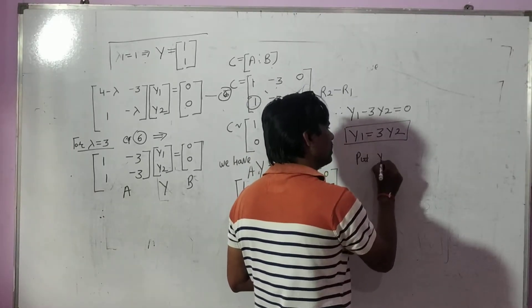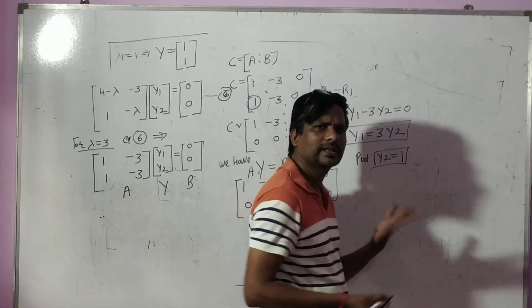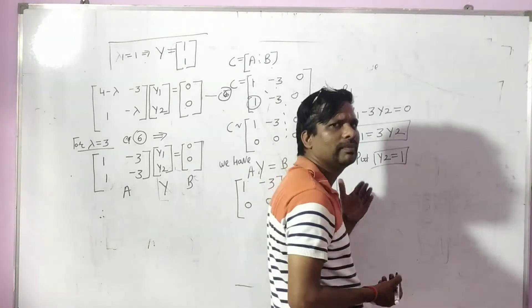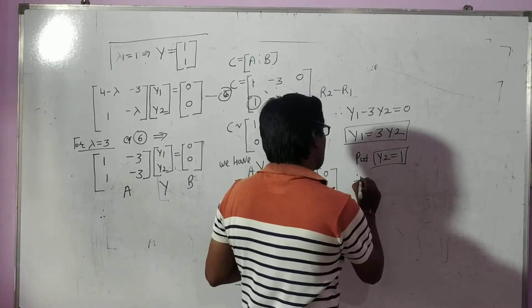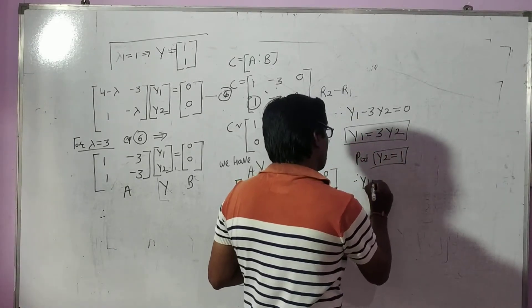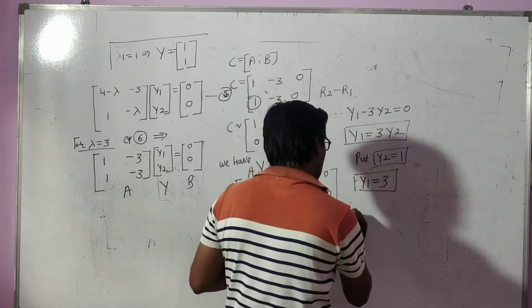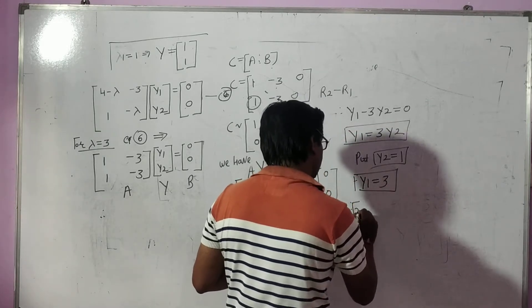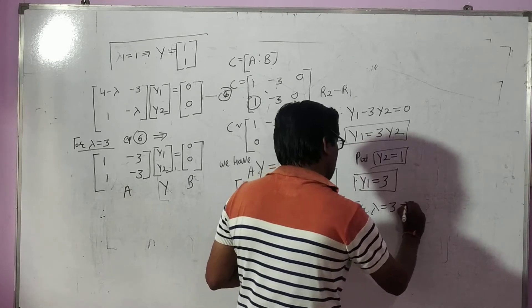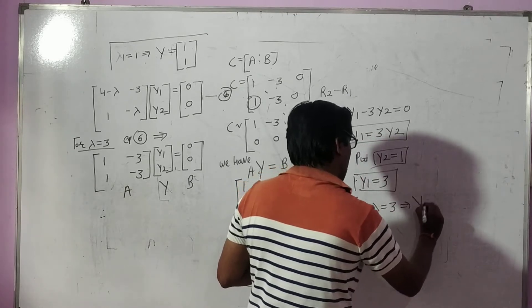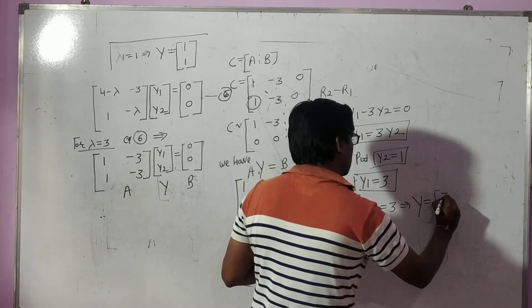Let y2 equal to one. Therefore y1 equal to three. Therefore for lambda equal to three, capital Y is exactly equal to the vector three one.